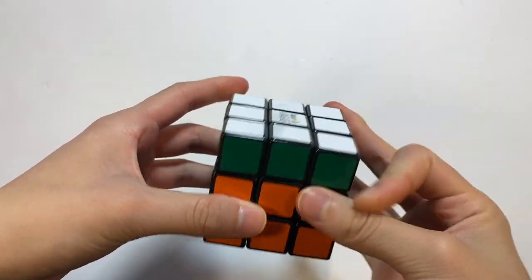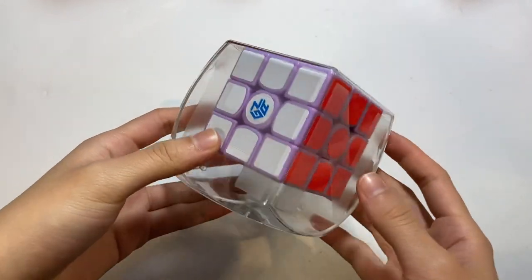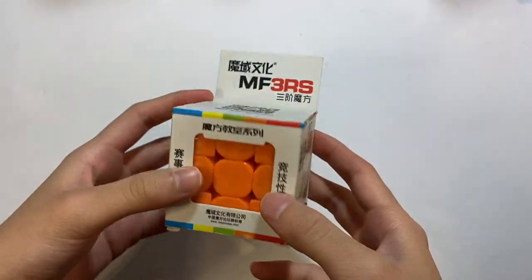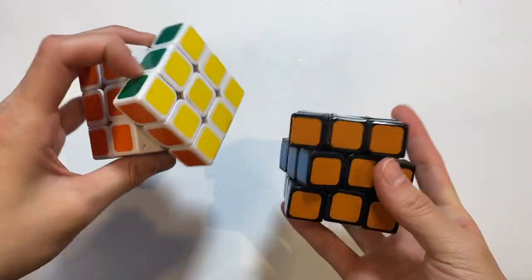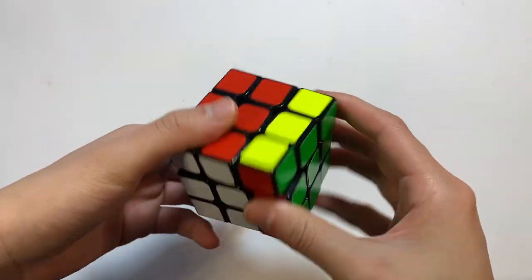A random Maru 3x3. A Gans 357. The Gans 356 Air Grand Master Edition. I have this MF3 RS. These two Fang Shi Shuang Ren 3x3s. A YJ Guanlong in its packaging. The Moiyu Along Version 2.